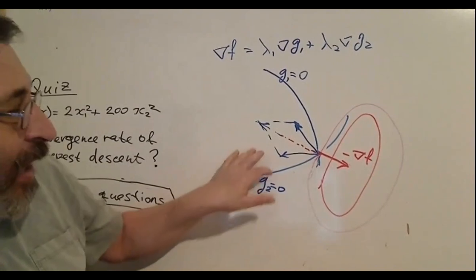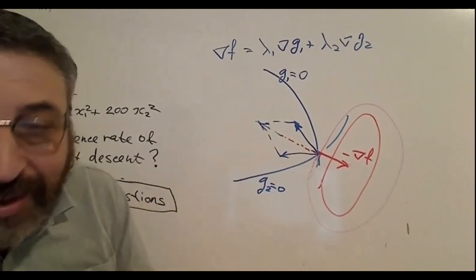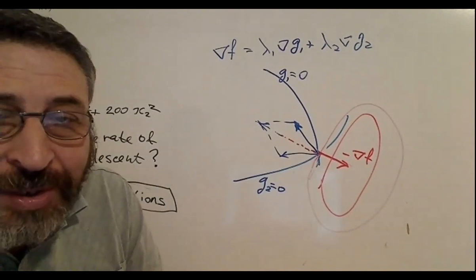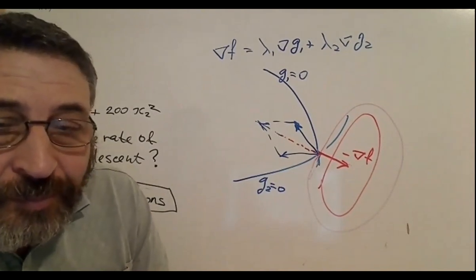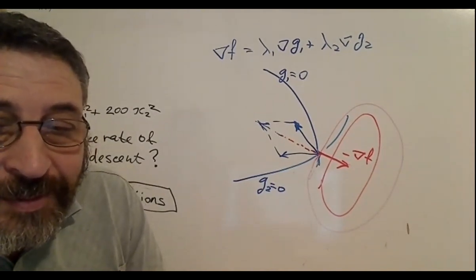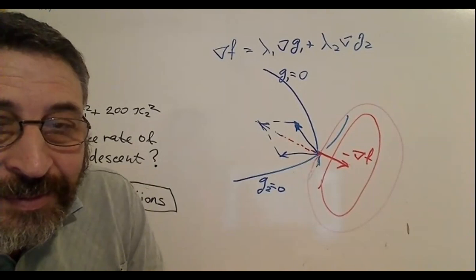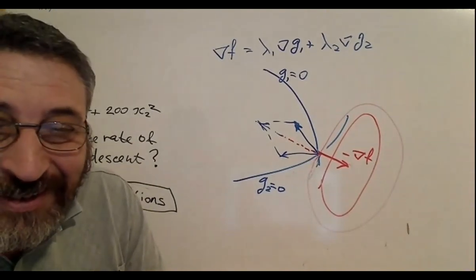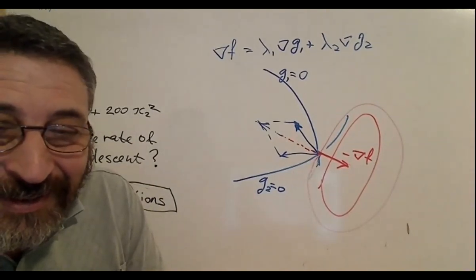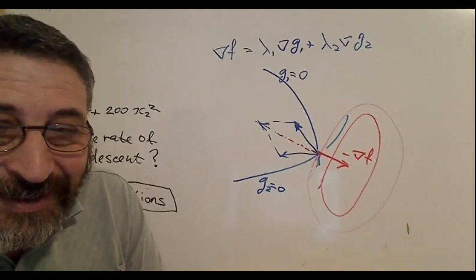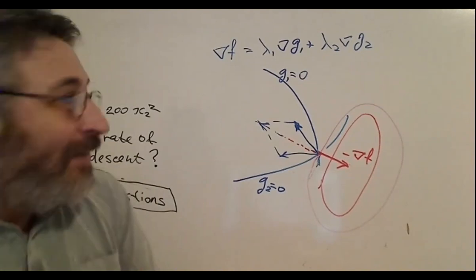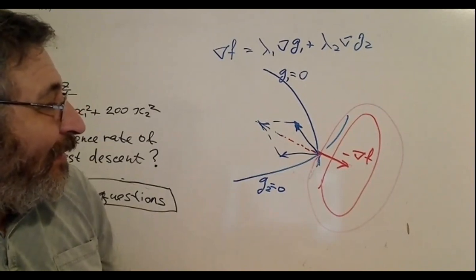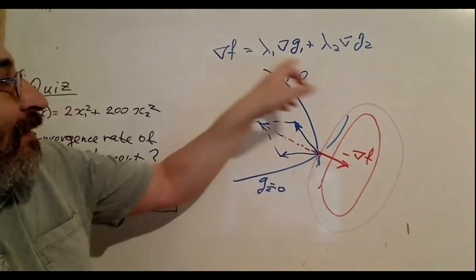I hope this gives some intuition. The question is: why is the sum of gradient of f plus lambda times gradient of the constraint equal to zero?